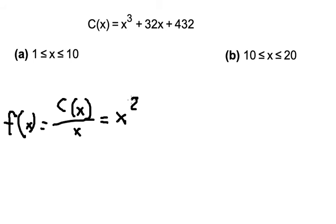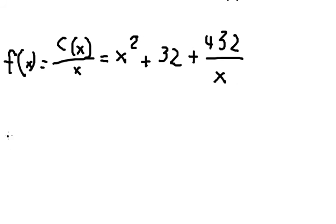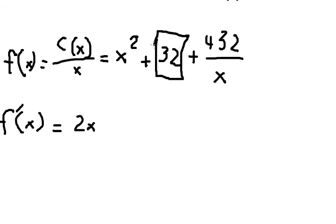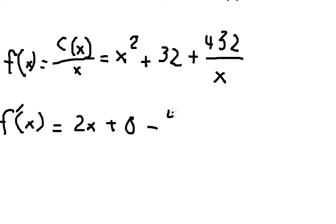So we have C(x), which gives us x squared plus 32 plus 432, all divided by x. Now we need to find the first derivative of the function. The first derivative of x squared gives us 2x; the constant term gives zero; and the derivative of 432/x gives negative 432 over x squared.